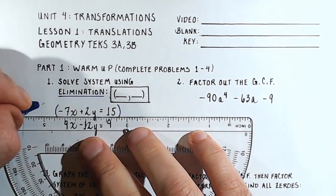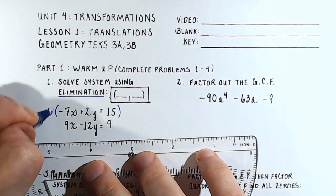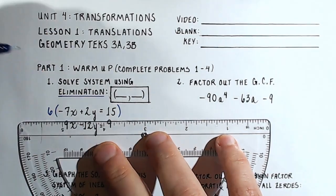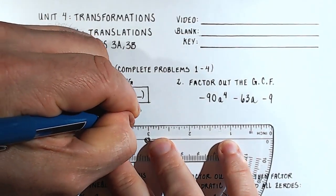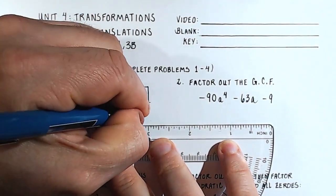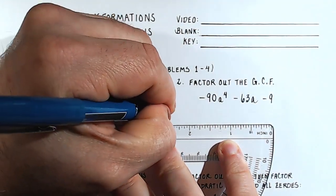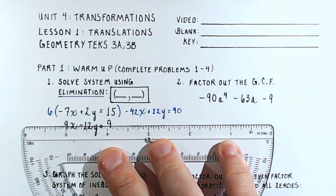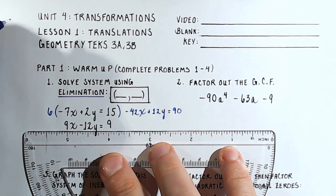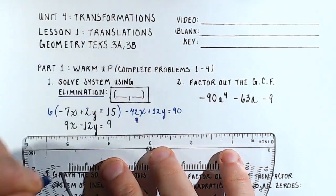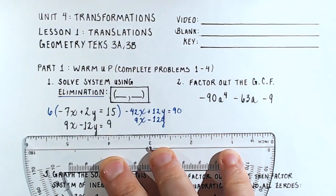We'll multiply through the top equation by 6, because 6 times 2 is 12. So we distribute 6 through each term in the top equation, which gives us negative 42x plus 12y equals 90. Then we write the remaining equation just as it appeared: 9x minus 12y equals 9.